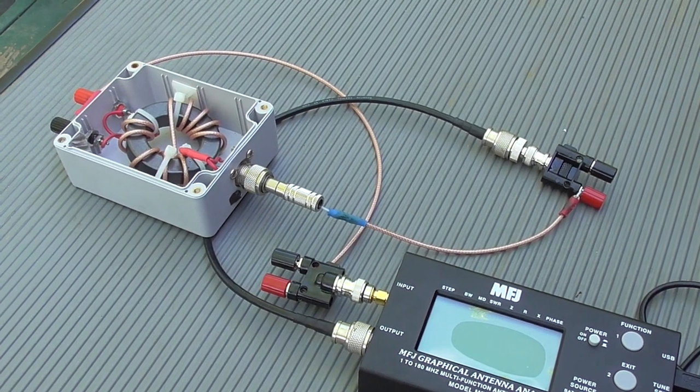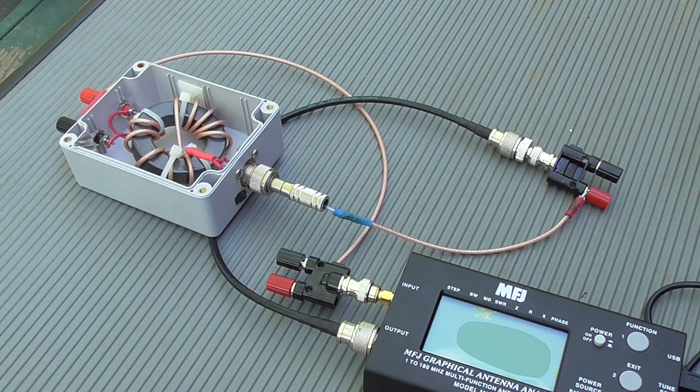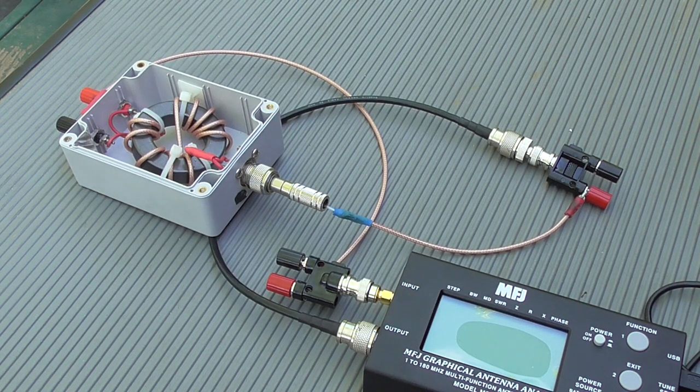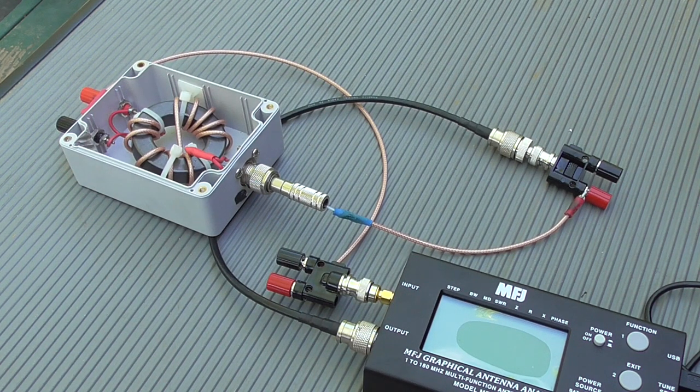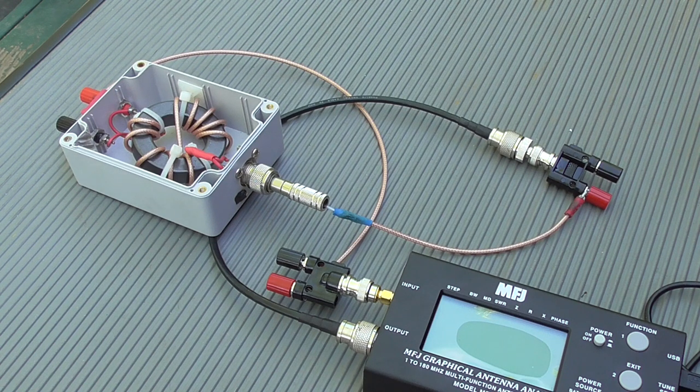So after I conferred with some colleagues and after reading a lot of the available literature on the internet, I found that you could measure impedance losses by using what's known as a Vector Network Analyzer, also known as a VNA for short.